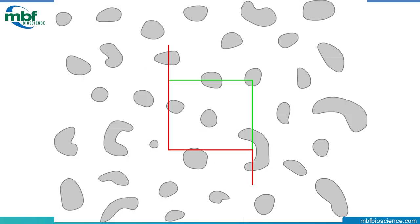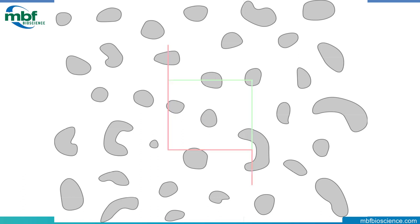The way that unique point gives each cell an equal chance to be counted once and only once is as follows: we'll mark the unique point of a cell if that unique point falls inside the counting frame or touches the green line. If the unique point touches the red line or falls outside the counting frame, we won't mark that cell. This is useful because if we had another counting frame directly adjacent to this one, those unmarked cells would be marked in that adjacent site.